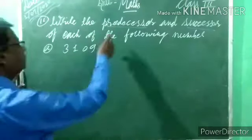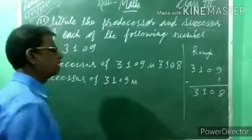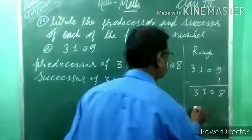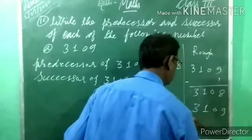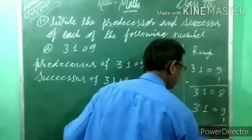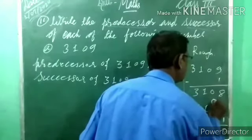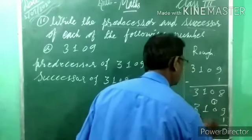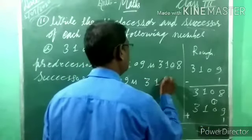Understood? Next, now what we have to find? Successor. Successor of the same number 3,109: which number comes after? That is, do plus 1. Successor means 3,109 plus 1. Now, 9 plus 1 is 10 — carry 1. 1 plus 0 is 1, then 1 and 3. So 3,110.